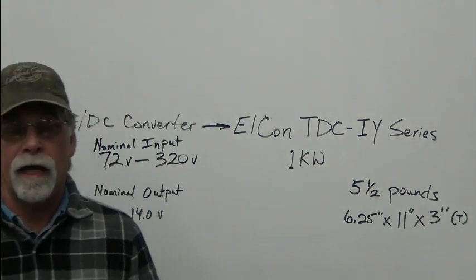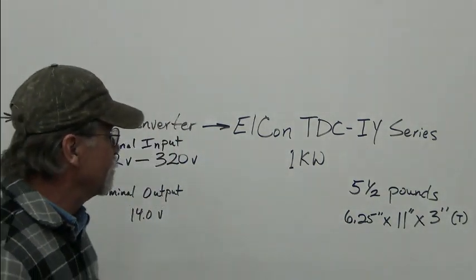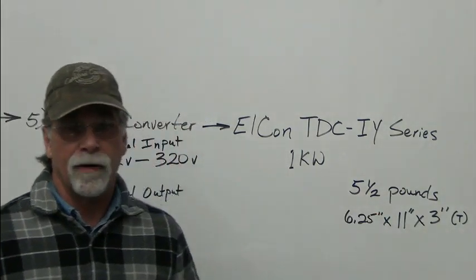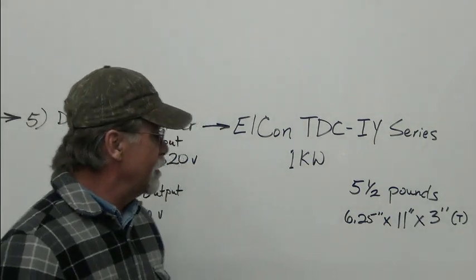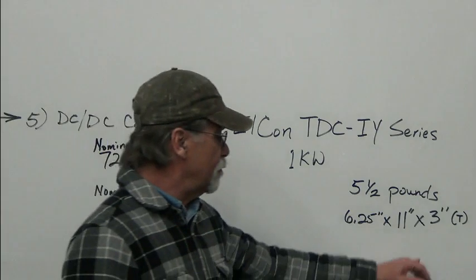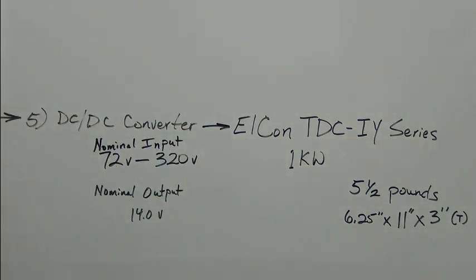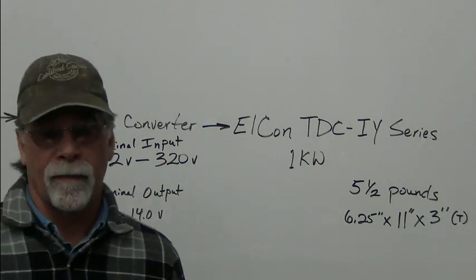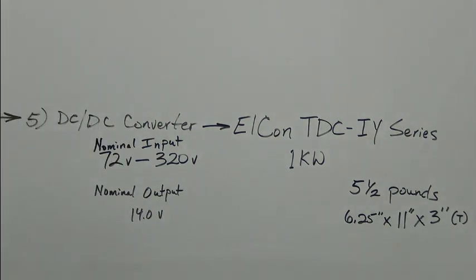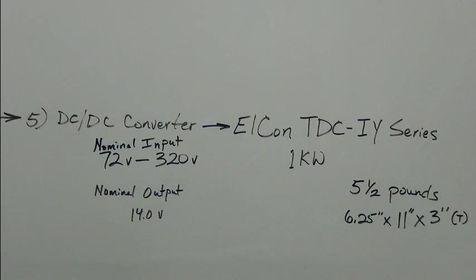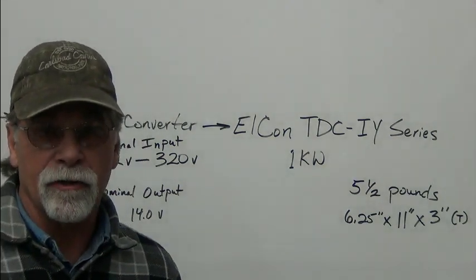It's the Elcon TDC-IY series. It's got an output of 1-kilowatt, approximately 5½ pounds, 6¼ inches wide by 11 inches long by 3 inches tall. The nominal input is from 72 volts to 320 volts, and the nominal output is 14 volts. So that's the overview. Let's take a little closer look at it now.